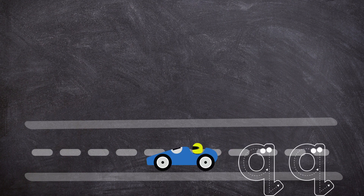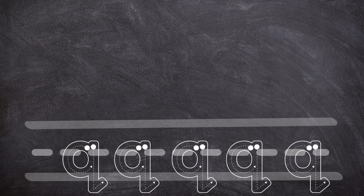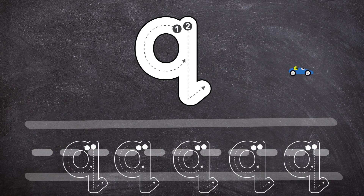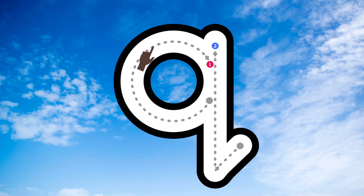Lowercase Q. Let's trace lowercase Q in the sky. Put your finger up, start at the top, curve around and down to the middle, go back to the top, straight down and up.